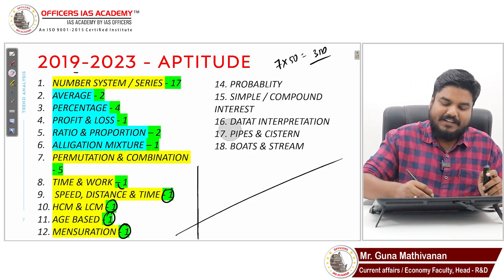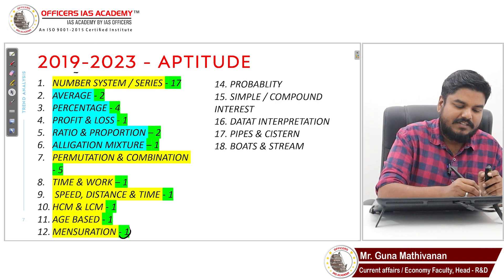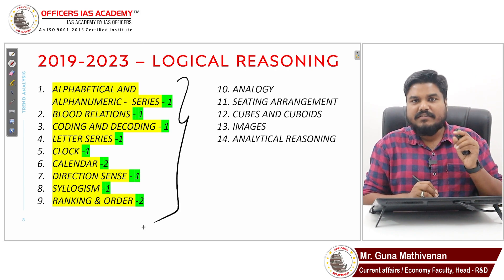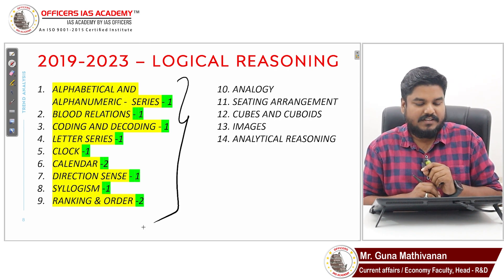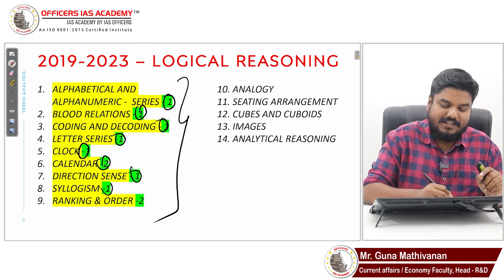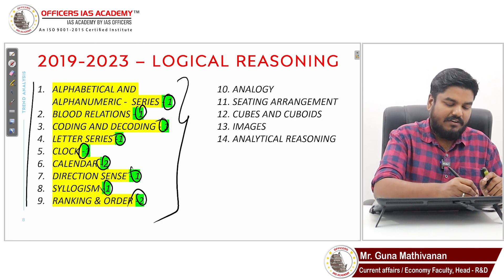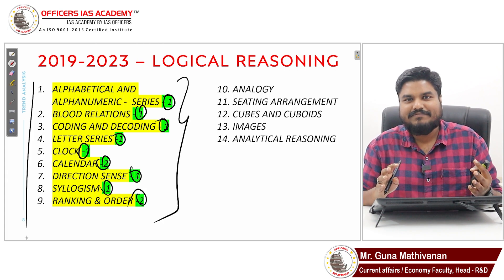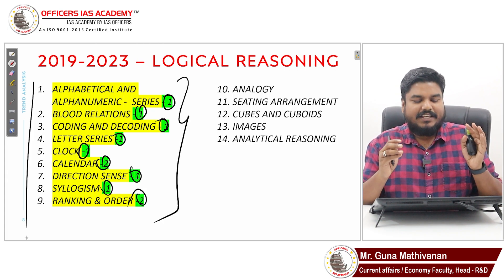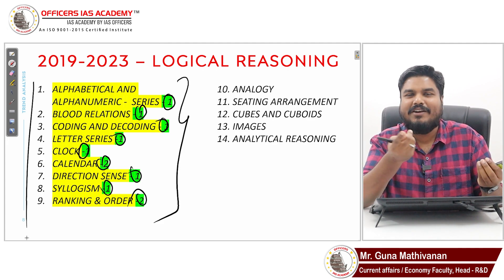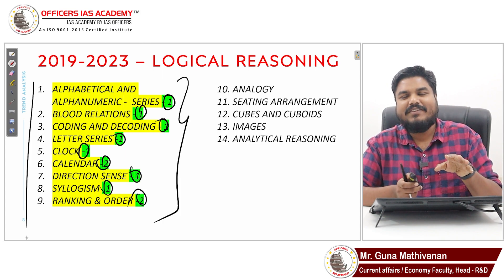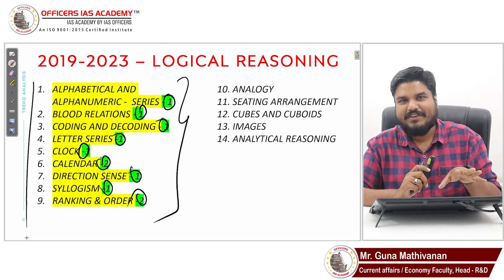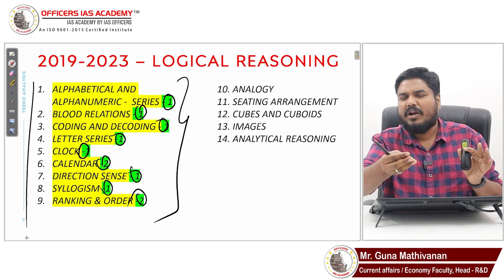Now for logical reasoning — these are the areas from which you consistently get questions in the last five years. From every area you get at least one question, so all nine chapters must be prepared. Logical reasoning is a low-hanging fruit — there are no formulas involved. Given 15 minutes you could solve any question; the challenge in the exam is solving it in about one and a half to two minutes.